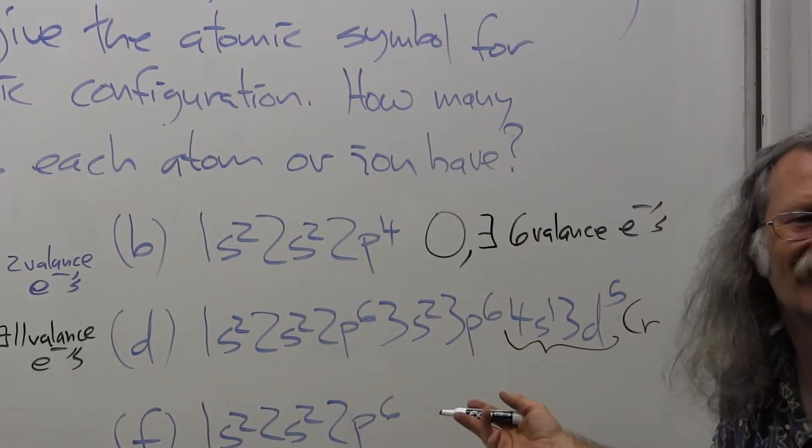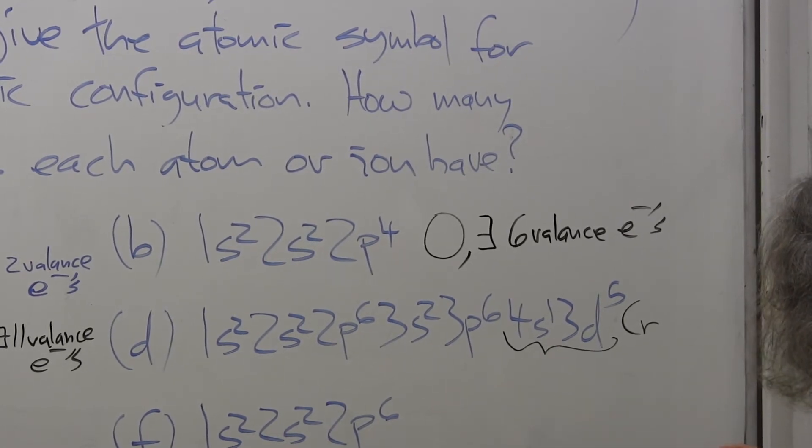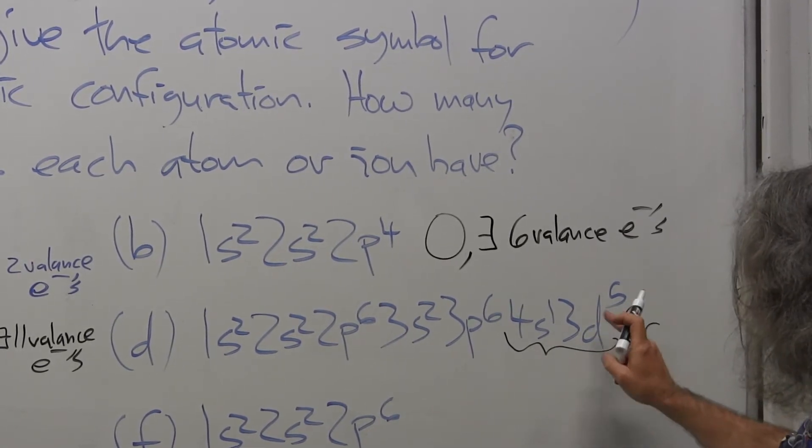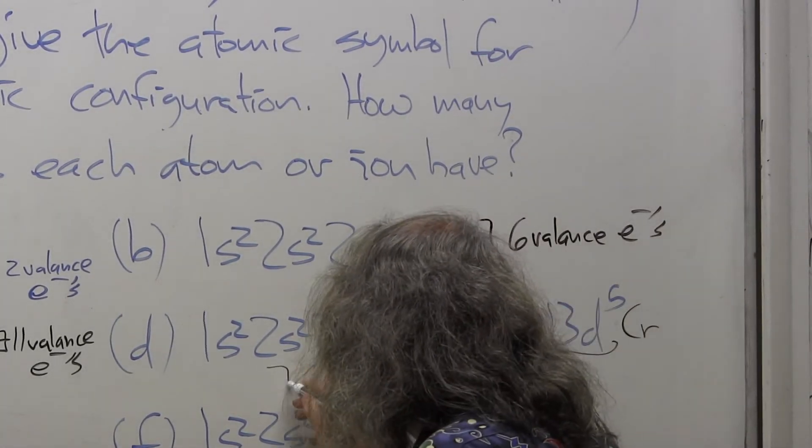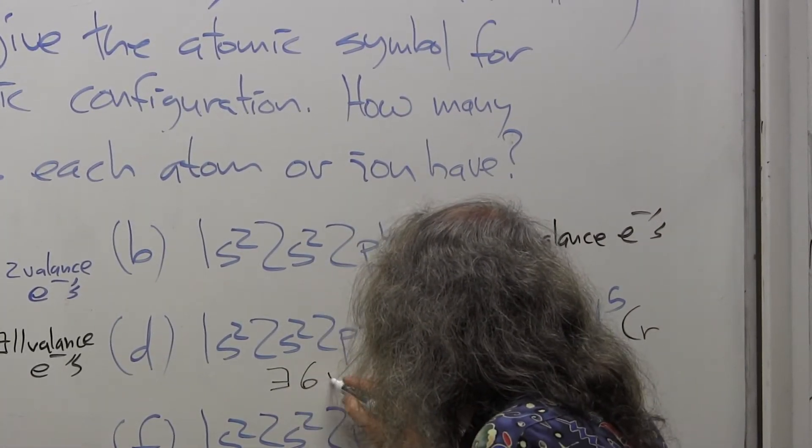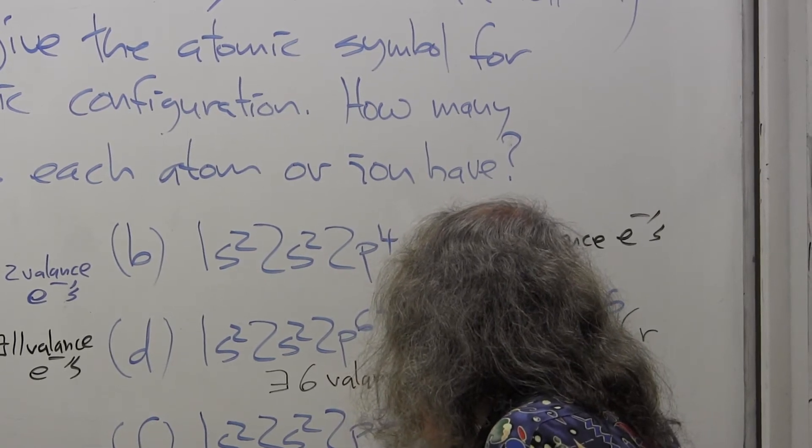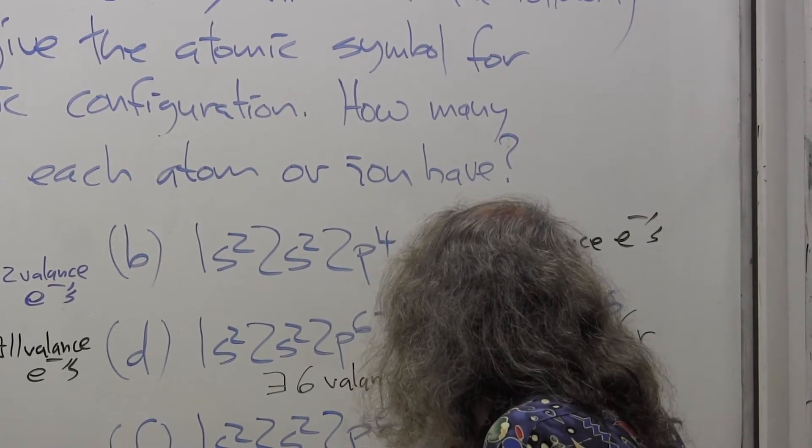But I didn't give it to you that way on the test—you'll have to figure this out yourself. Now I have five and six, so there exist six valence electrons.